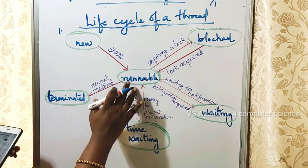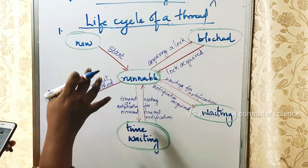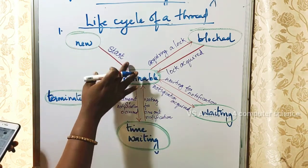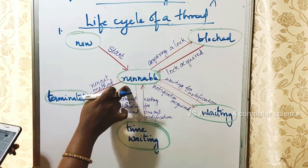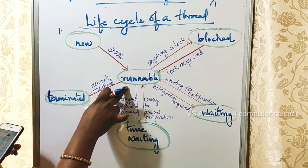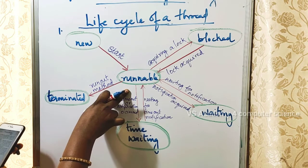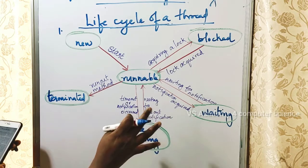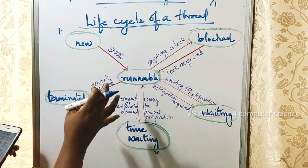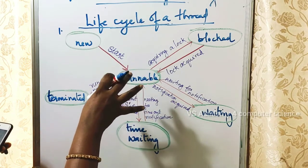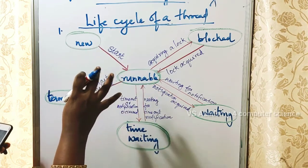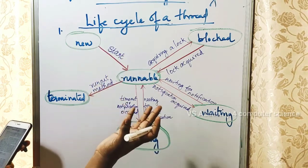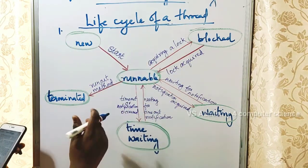The next state is the runnable state. By the word meaning itself, it is ready to run. In the runnable state, the thread is ready to run and can actually be running or ready to run at any instant. The runnable state is managed by the thread scheduler.